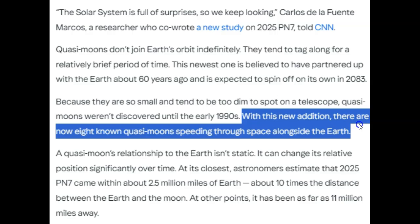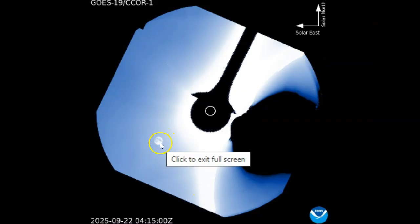Is that one of them that we just saw? 2025 PN7. I don't know, folks. This could be Earth, this could be the moon, this could be a reflection of GOES-19 CCOR-1 instrumentation. This could be a space rock, this could be a meteor, this could be a quasi-moon. There's no telling when that's his new equipment there.